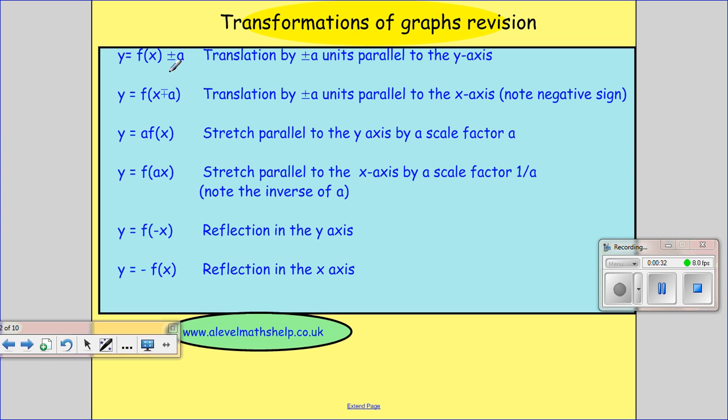So if we have y equals f of x plus or minus a, this is happening outside the function. And this is a translation by plus or minus a units parallel to the y-axis. So this is just moving it up or down. If it's plus a, it's up, and if it's minus a, it's down. This one's happening inside the function, so our function's changing. We're now, the function's acting on x minus a or x plus a. And this is a translation by plus or minus a units parallel to the x-axis. And this actually takes it right if it's minus a and left if it's plus a.